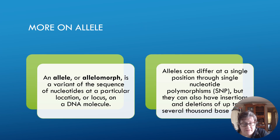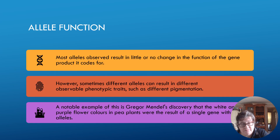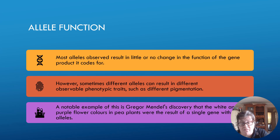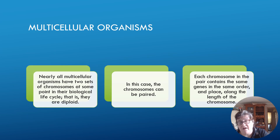An allele, or allelomorph, is a variant nucleotide sequence at a particular location or locus on a DNA molecule. Alleles can differ at a single position through a single nucleotide polymorphism (SNP), but they can also have insertions and deletions up to several thousand bases. Most alleles result in little to no change in the function of the gene product they code for. However, sometimes different alleles can result in different observable phenotypic traits such as different pigmentation — in humans, eye color, skin color, and hair color are controlled by alleles. A notable example from Mendel is the white and purple flowers resulting from a single gene.